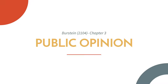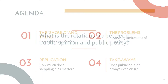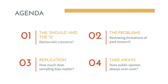We're talking today about Burstein's 2014 Chapter 3, which is on public opinion. It's asking the question: what is the relationship between public opinion and public policy? Burstein is looking at some really novel and critical data to think about sampling bias.